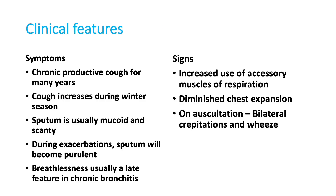The clinical features of chronic bronchitis include chronic productive cough for many years. Cough increases during winter. Sputum is mostly mucoid, but sometimes the patient can have exacerbation, becoming breathless with purulent sputum. Breathlessness is usually a late feature in chronic bronchitis. Increased use of accessory muscles is seen when the patient is symptomatic. Diminished chest expansion on auscultation is present.